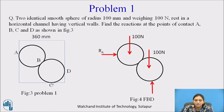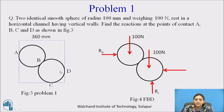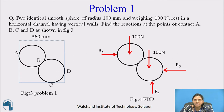At point C, the surface of the channel is horizontal, so after replacing this horizontal surface, the support reaction will be perpendicular to the surface — that is, vertical — and it is named RC. At point D, which is the contact point between cylinder 2 and the vertical wall, the support reaction is horizontal because the reaction is always perpendicular to the support, and it is named RD.